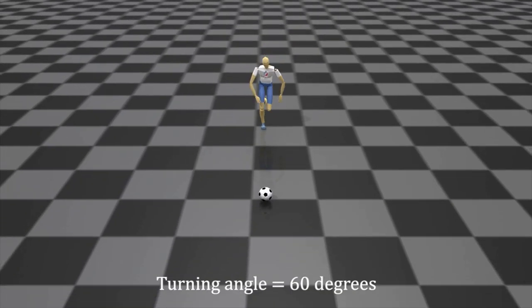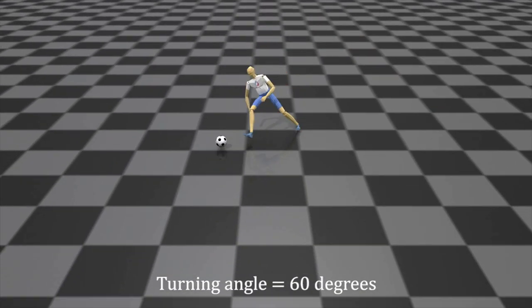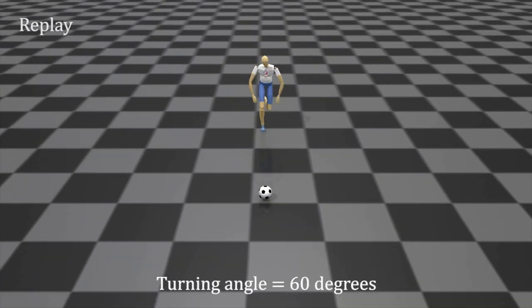Large contact forces during sharp turning. When the character changes direction sharply, the large contact force occurs on the ground and leads to unrealistic motion.